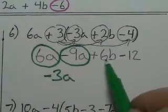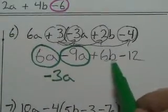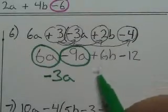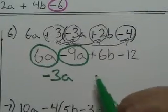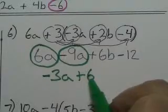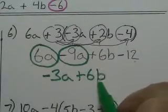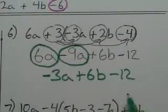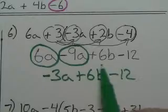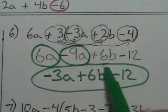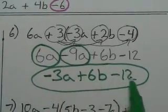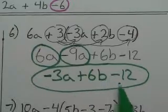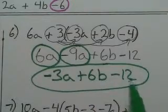Looking at this, I have a 6b and a minus 12. There's no other like terms, so I'll just bring those down. I have positive 6b and a minus 12, and that is your answer. These are unlike terms — you cannot combine these. One has an a, one has a b, and the other one's just a constant.